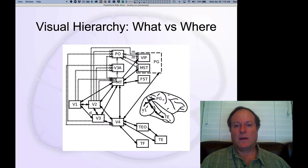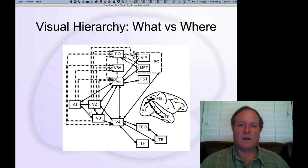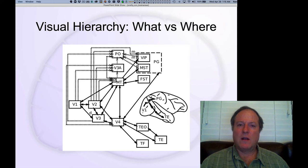Now we'll continue by talking about the notion of hierarchy and how the general organization and flow of information proceeds from one layer to the next. As seen already in the networks chapter, this is a critical element of neural computation, allowing higher levels in the network to become more abstract and have higher-level, more behaviorally relevant representations.